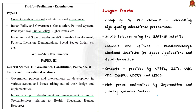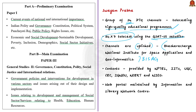Swayam Prabha is a group of 34 DTH channels devoted to telecasting high-quality educational programs on a 24/7 basis using the GSAT-15 satellite. These channels are uplinked from BISAG — Bhaskaracharya National Institute for Space Applications and Geoinformatics — situated in Gandhinagar. Content is provided by NPTEL, IIT, UGC, CEC, IGNOU, NCERT, and NIOS, and the web portal is maintained by Inflibnet (Information and Library Network).